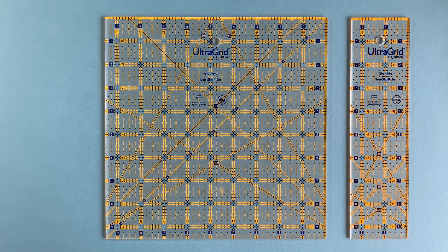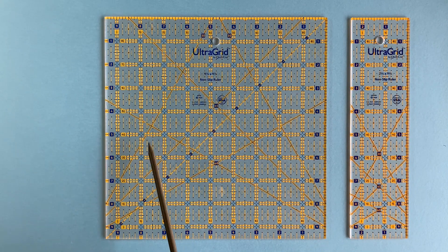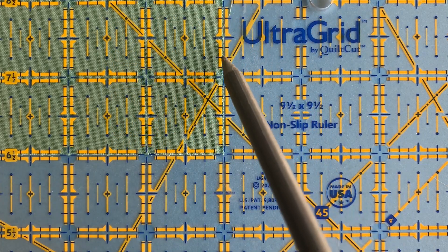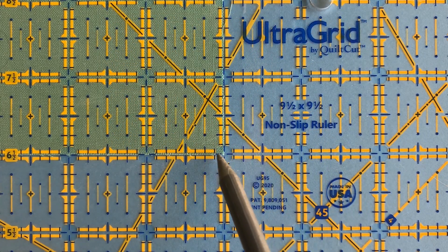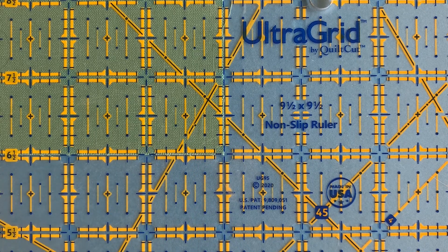Measurement scales on other rulers have solid lines with hash marks that hide the fabric. UltraGrid rulers replace the solid lines with our exclusive patented see-through InvisiLine windows, which allow you to see the edge of your fabric for easy alignment.